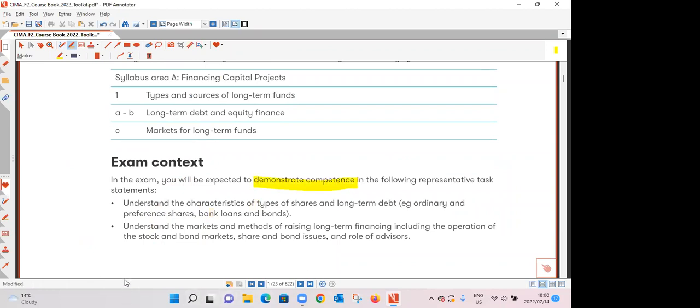For this chapter the examiner expects you to have a good understanding of the characteristics of types of shares and long-term debt which then brings us to the indication that the two sources of finance that we are going to be looking at are debt and equity. So when we talk of shares you shall see we have basically two types: the ordinary shares and the preference shares. Then for long-term debt we do have bank loans and we also have various types of bonds.